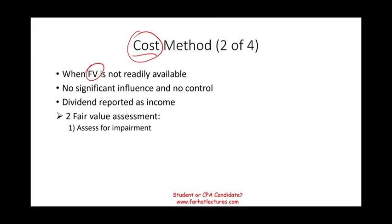Although it's called the cost method, GAAP allows two fair value assessments. First, you must assess for impairment — when the investment goes down in value and you don't expect it to recover. For example, imagine you invested a million dollars in a small private pharmaceutical company whose sole purpose was to create a COVID vaccine. If the FDA rejected their submission and competitors like Pfizer and Moderna already have products on the market, that company is impaired. If impairment is likely, you must report a loss and adjust the investment downward.